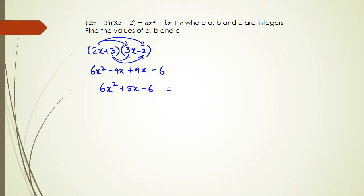And as you can see, this is equal to ax squared plus bx plus c. So what we can say is therefore, a is equal to 6, b is equal to 5, and c equals to negative 6.